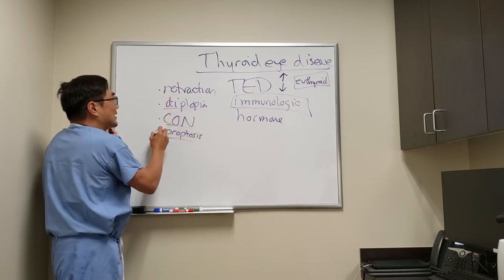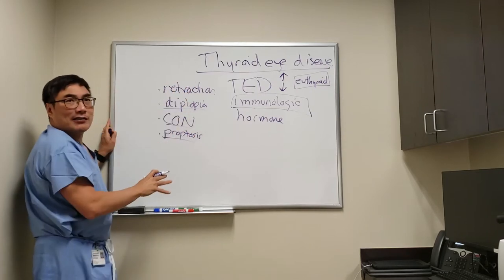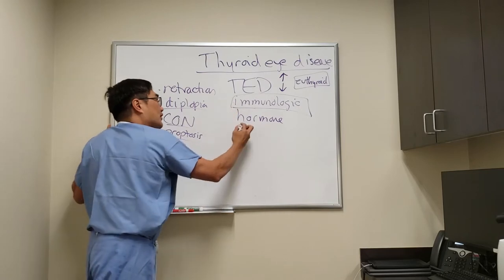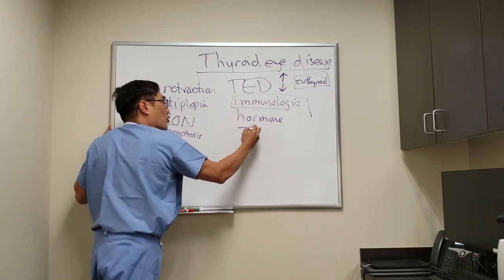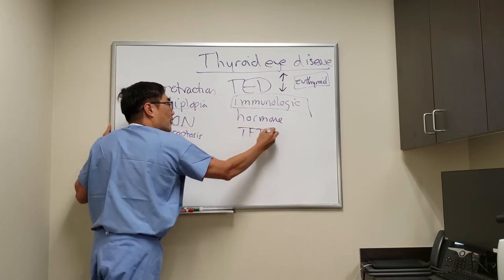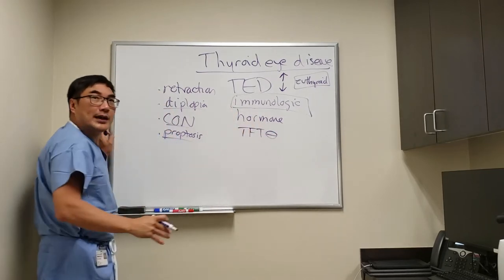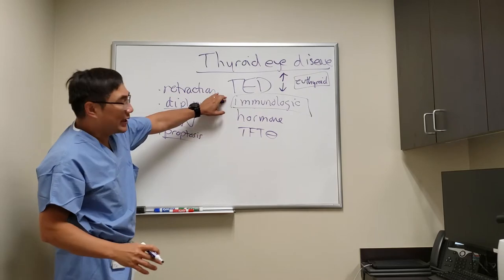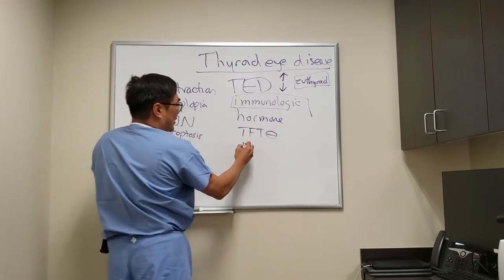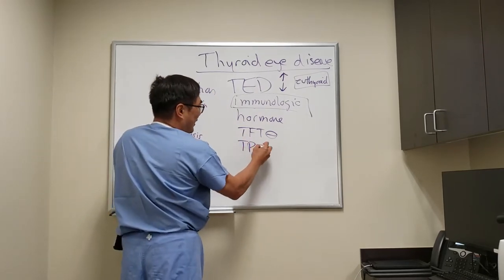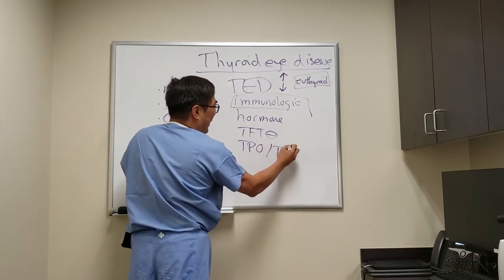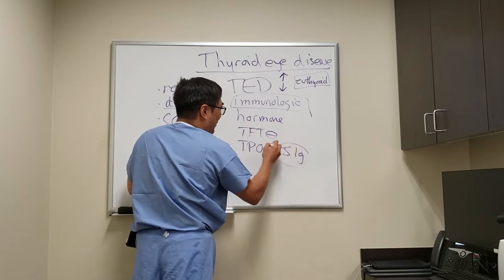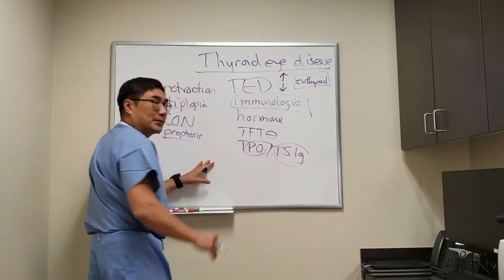So it looks just like regular thyroid eye disease, but their thyroid function studies — their hormones — are all normal. And so in those patients, we need to do the immunologic testing, which is the thyroid peroxidase antibody and the thyroid stimulating immunoglobulin.